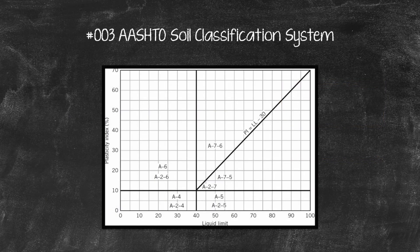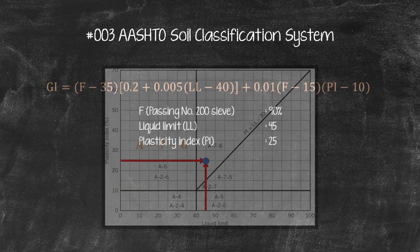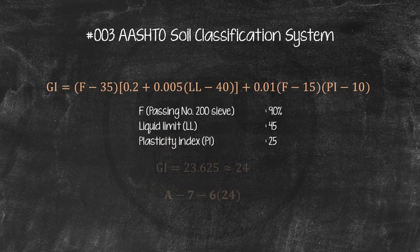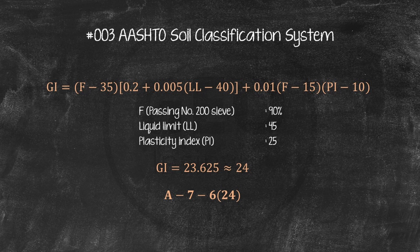Input LL and PI to plasticity chart, and the soil is clay, A76. Group index is 23.63, or say 24. So, the soil classification is A76, 24.